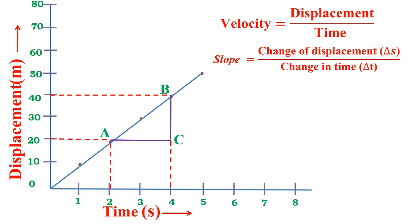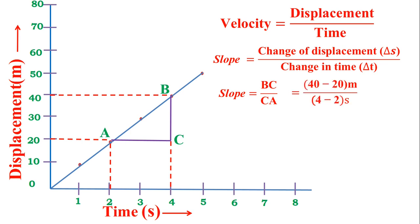Now we have both the displacement and time values. BC represents the change of displacement — that is, from A to B — and CA represents the change of time, Delta t. BC means 40 meters minus 20 meters, which gives the change of displacement, and CA means 4 seconds minus 2 seconds, which gives the change of time.